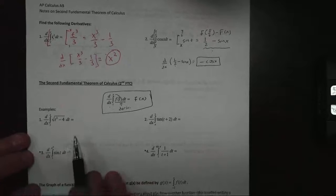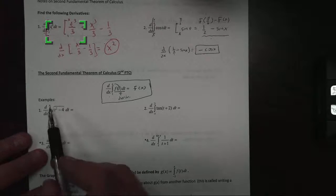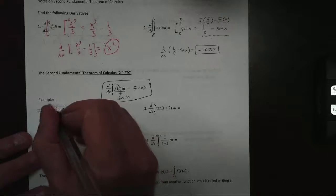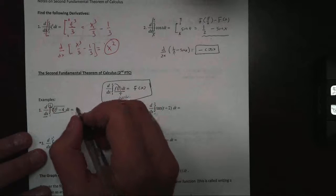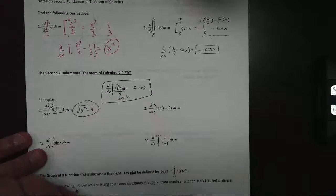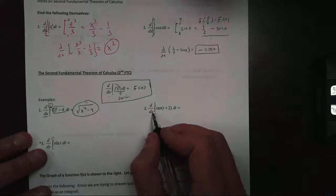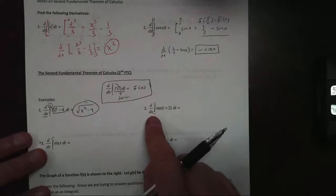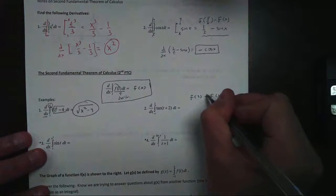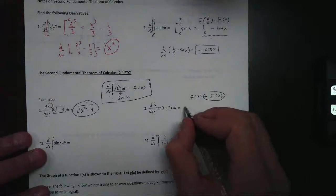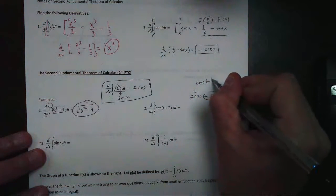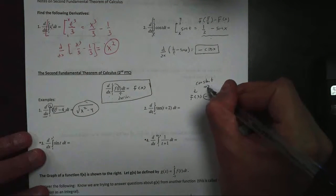The only hard ones we're going to see are questions like 3 and 4 — we'll get to those in a minute. For a question like number 1, I'm looking for the derivative of my antiderivative. My rule just says replace all my t's with x. This becomes x squared minus 4. For number 2, be careful. I would look at the FTC here — this is f of 2 minus f of x. It's that minus part that I want. I don't worry about the 2; that's a constant.